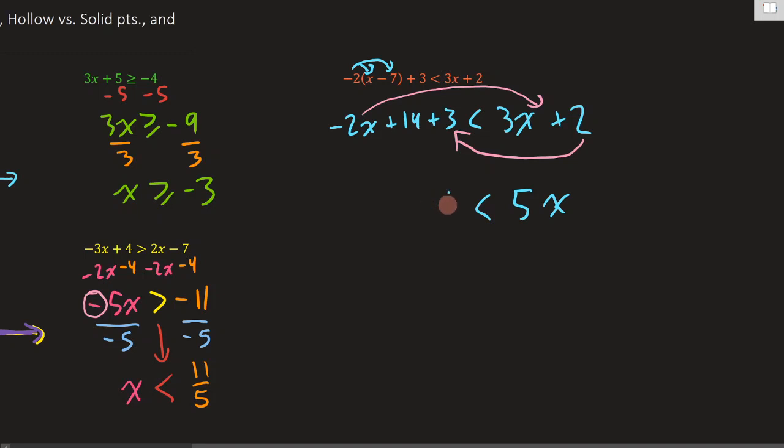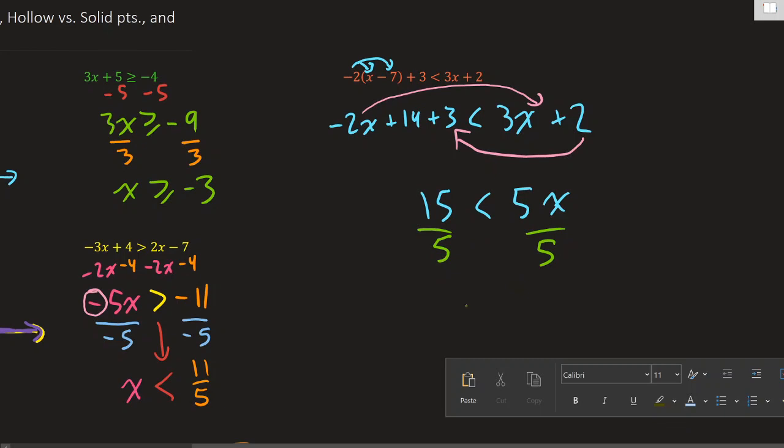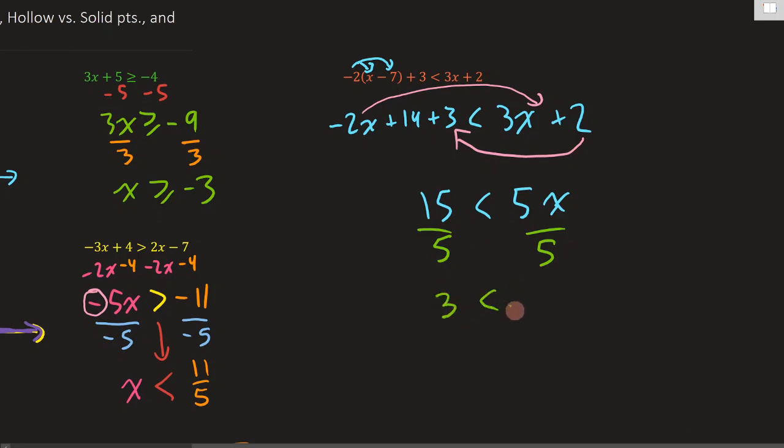And then this side is going to be 15. And now we can just divide by 5, divide by 5, and we get 3 is less than x. Or you can rearrange that. Just make sure the alligator is still eating the bigger thing. x greater than 3. And there you go. That's grade 9 inequalities in like, I don't know, 12 minutes or something. Good luck with your practice.